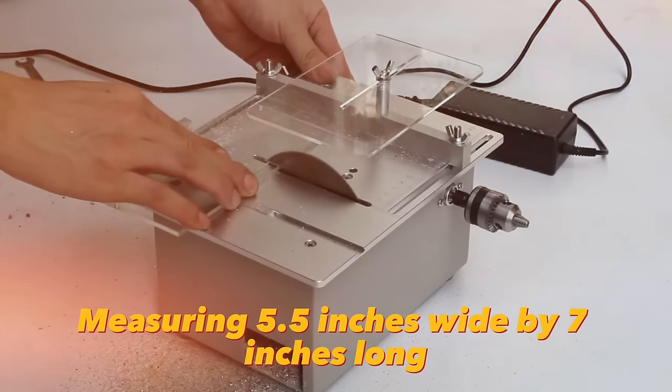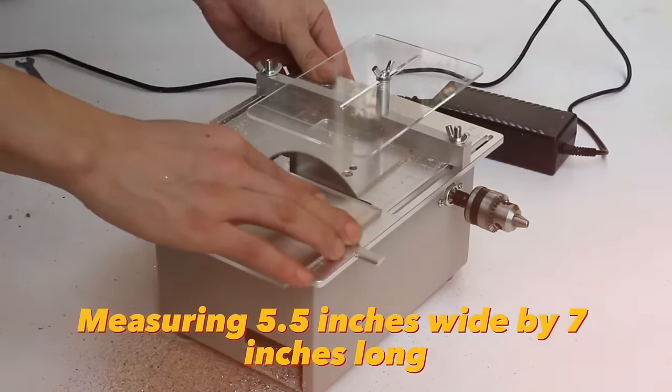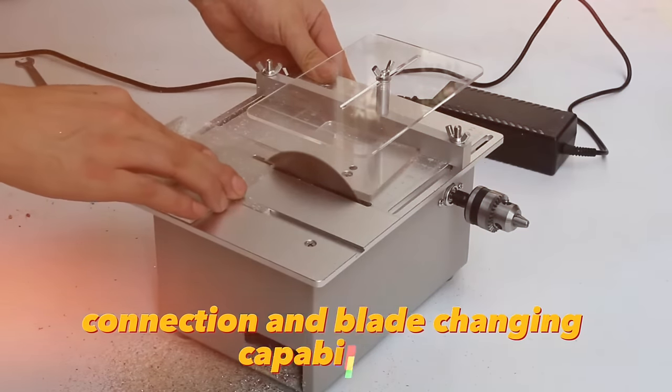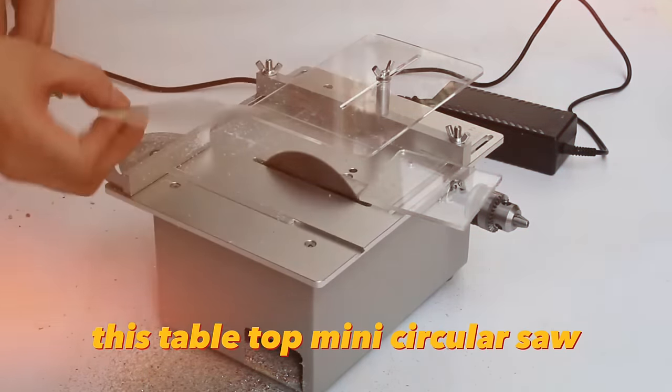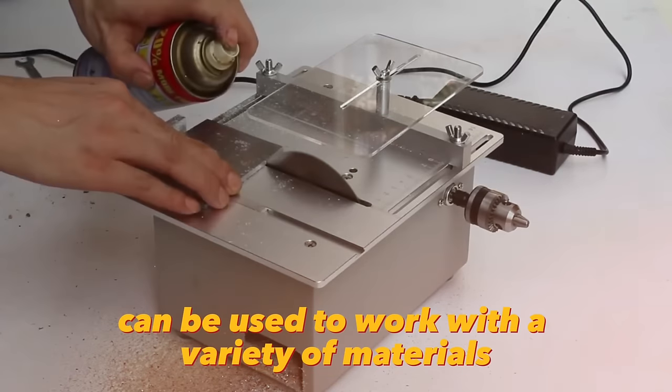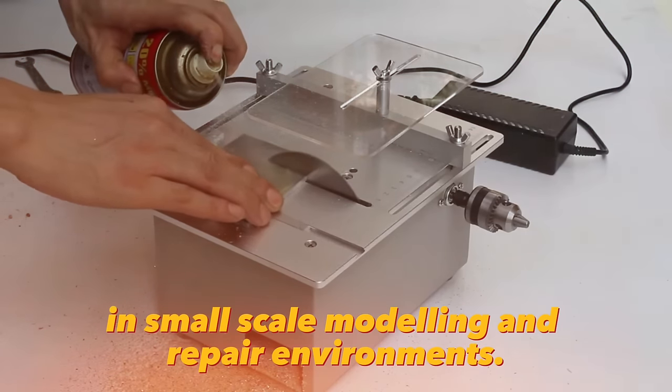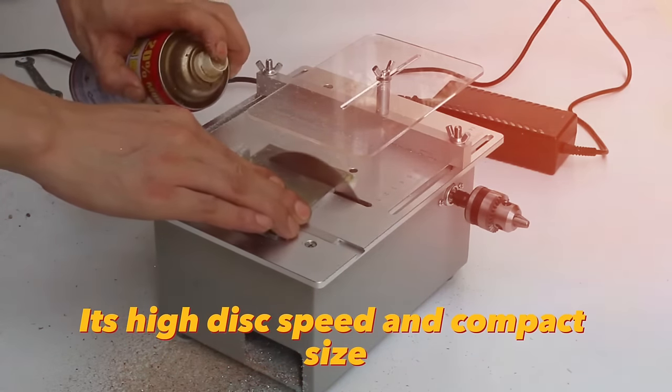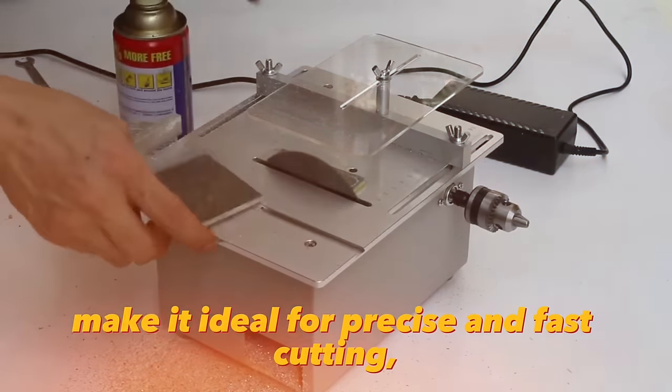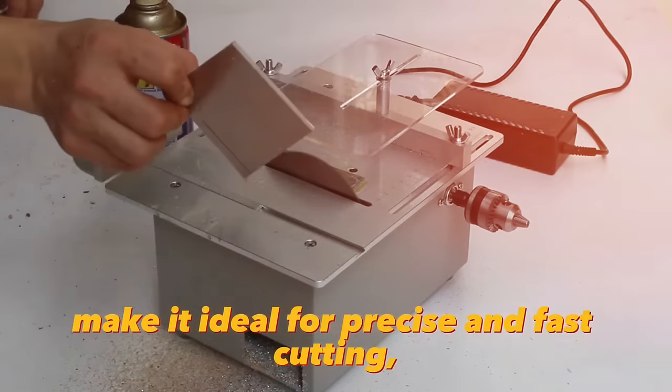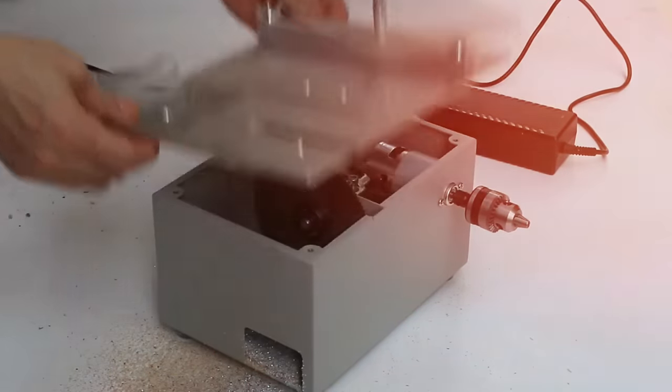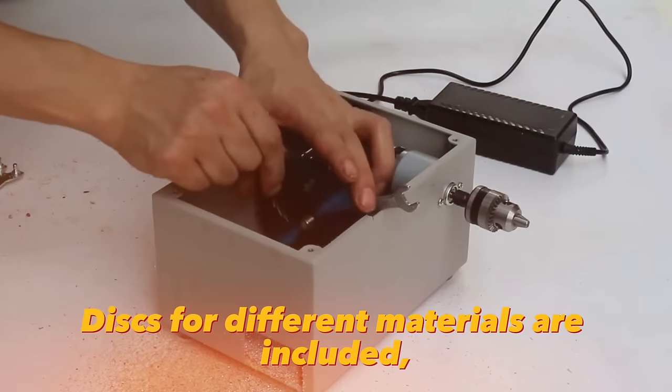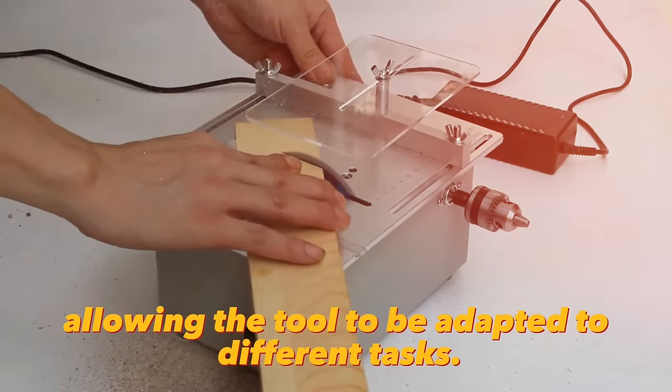Measuring 5.5 inches wide by 7 inches long and featuring a vacuum cleaner connection and blade changing capabilities, this tabletop mini circular saw can be used to work with a variety of materials in small-scale modeling and repair environments. Its high disc speed and compact size make it ideal for precise and fast cutting, while the vacuum cleaner connection ensures a clean work area. Discs for different materials are included, allowing the tool to be adapted to different tasks.